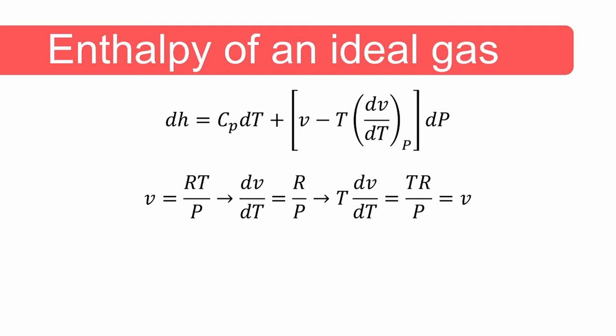From this, we obtain an equation that enables us to calculate a value for enthalpy relative to a reference value at a reference temperature. In general, the specific heat of an ideal gas is not a simple equation, and the integration is not trivial. We do not want to perform the integration every time we need a value of enthalpy, so the integration is performed for common gases under the assumption of ideal gas behavior and the values are tabulated.